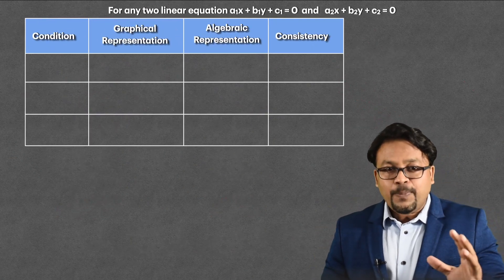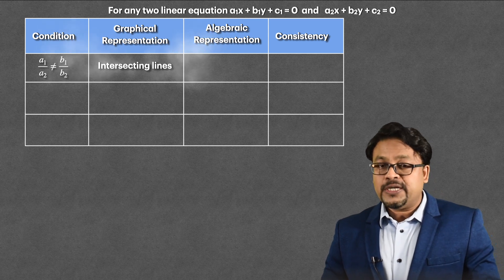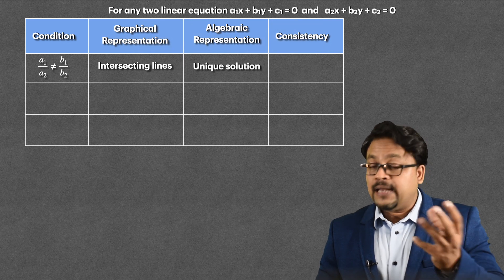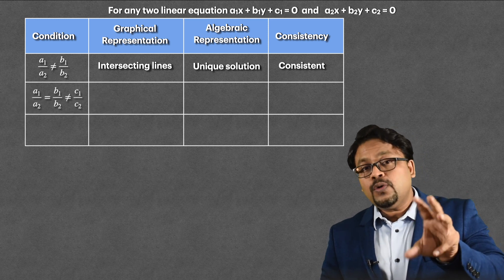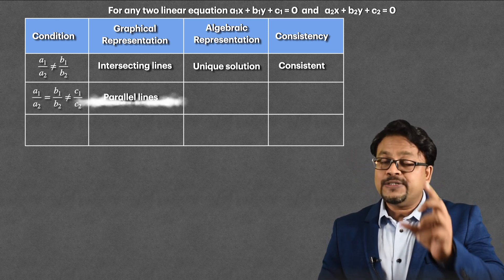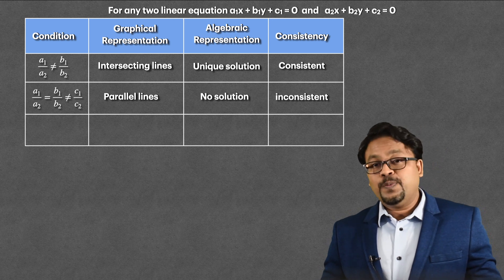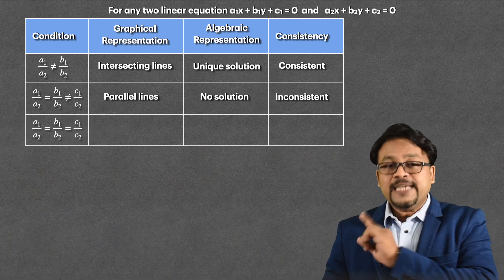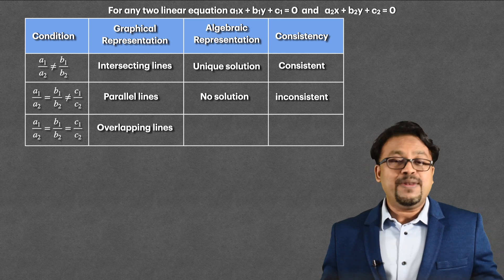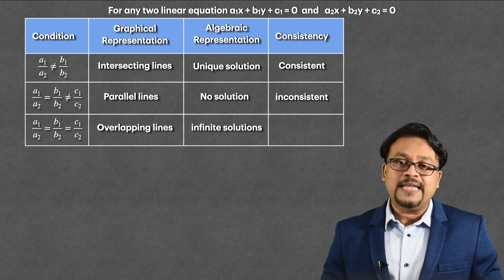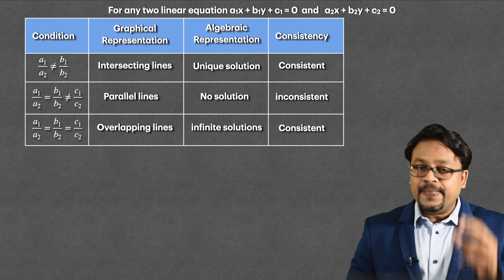Let us quickly revise. If the condition is a1/a2 ≠ b1/b2, then the lines are intersecting, it has a unique solution, and the lines are consistent. If the condition is a1/a2 = b1/b2 but ≠ c1/c2, then the lines are parallel, they do not have any solution, and the lines are inconsistent. Lastly, if all three ratios are equal, the lines are overlapping or coincident, they have infinitely many solutions, and since they have a solution, the lines are consistent. I hope you have understood this concept of consistency, graphical representation, and algebraic representation.